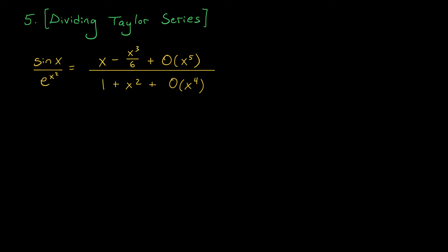Another thing that we can do with Taylor and Maclaurin series is division. We can take one Taylor series and divide it by another to get a Taylor series for the quotient of our two functions. Suppose, for example, that we have the Maclaurin series for sine x expressed as x minus x cubed over 6 plus big O of x to the 5, and for e to the x squared as 1 plus x squared plus terms of order x to the 4. To find the Maclaurin series for the quotient, we can essentially do polynomial long division, except now we have some big O terms to include.